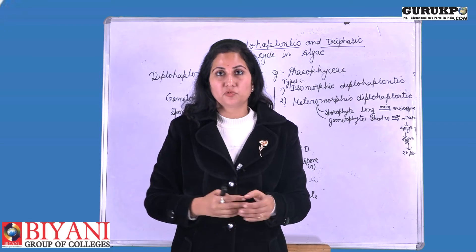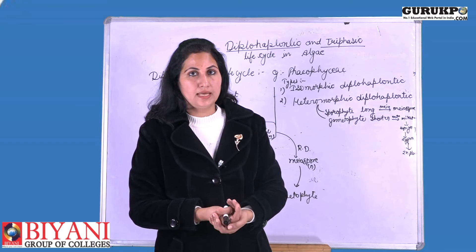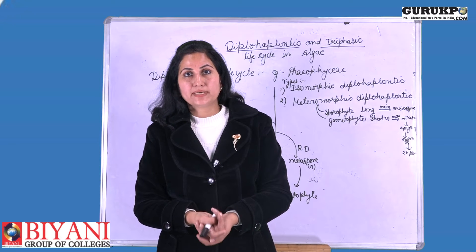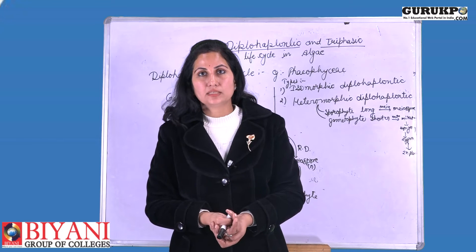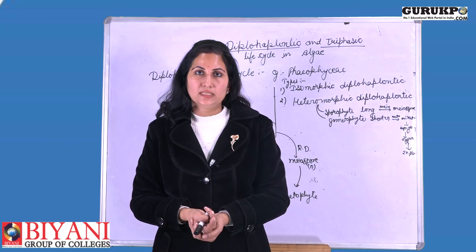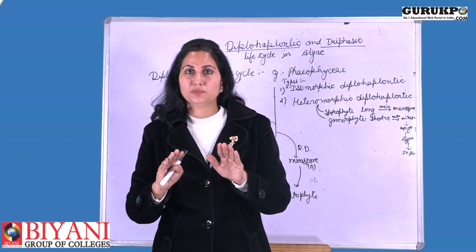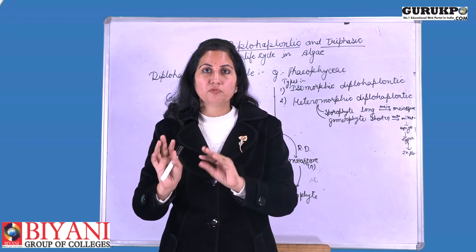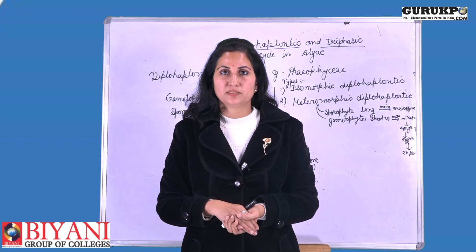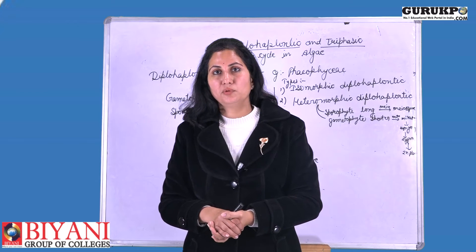In this type of life cycle found in members of Phaeophyceae, two types of species are found: one is the isomorphic type and another is the heteromorphic type of haplodiplobiontic life cycle. In the isomorphic type, the sporophytic plant and gametophytic plant both look alike to each other morphologically, though anatomically one is haploid and the other is diploid. In the heteromorphic type, there is a change in morphology.